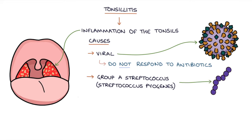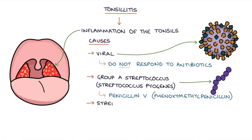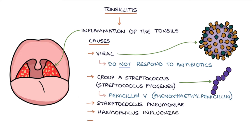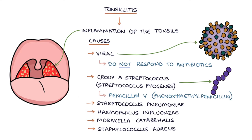Group A streptococcus can be effectively treated with penicillin V, or phenoxymethylpenicillin. The second most common bacterial cause of tonsillitis is streptococcus pneumoniae. Other causes include Haemophilus influenzae, Moraxella catarrhalis, and Staphylococcus aureus.